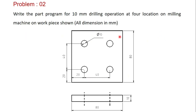This is a simple problem. Write the part program for a 10mm drill operation at 4 locations on the milling machine on the workpiece shown. The workpiece has rough dimensions: the overall width is 80mm. The distance between holes is 40mm, with 20mm margins on each side. The depth of the workpiece is 10mm.